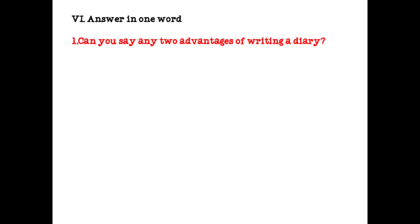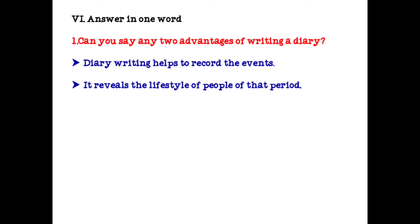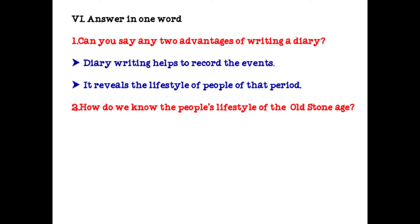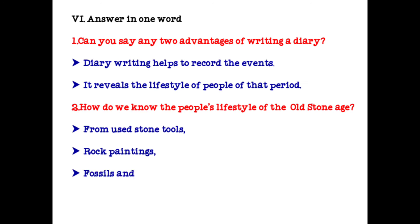Answer in one word. Can you say any two advantages of writing a diary? First advantage: diary writing helps to record the events. Second advantage: it reveals the lifestyle of people of that period. How do we know the people's lifestyle of the stone age? From used stone tools, rock paintings, fossils and other excavated material — these four points help us know people's lifestyle of the old stone age.